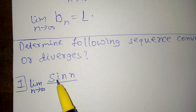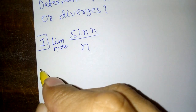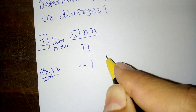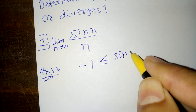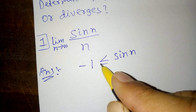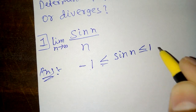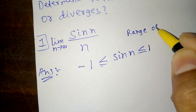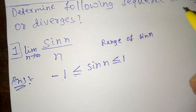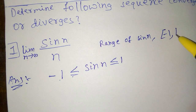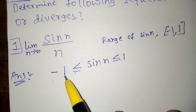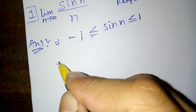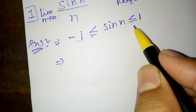Using this Sandwich Theorem we can solve problems. The first problem is: what is the value of the limit as n tends to infinity of sin n divided by n? We know that sin n always lies between minus 1 and plus 1. The range of sin n is minus 1 to plus 1, so we can write: −1 ≤ sin n ≤ 1. Now in the next step we divide the whole inequality by n.